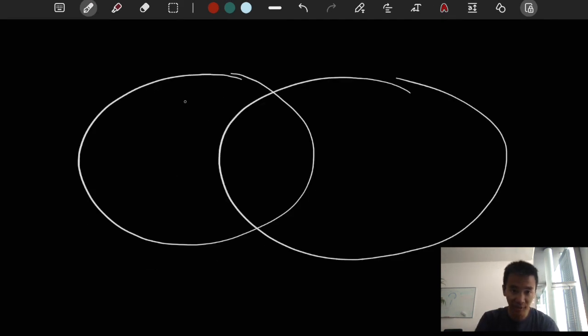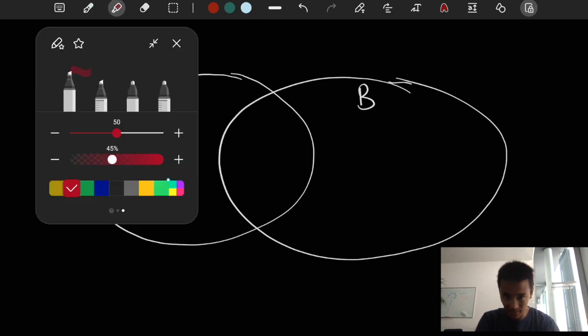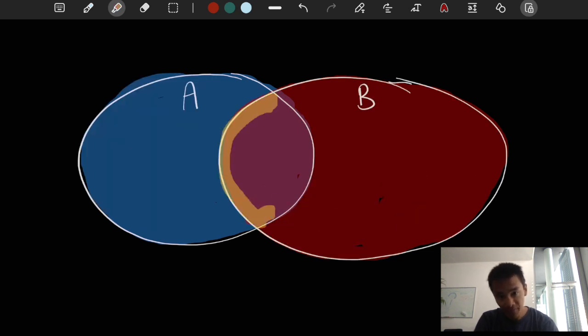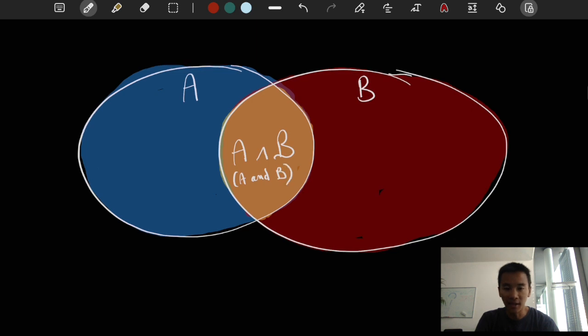So here the blue part is event A, the red part is event B, and the part at the intersection in orange is the event A and B.